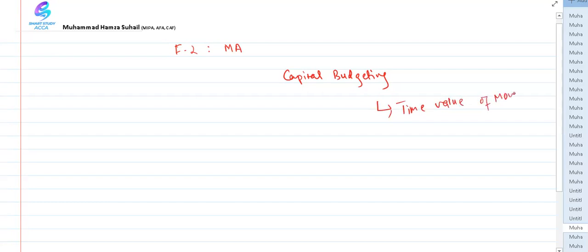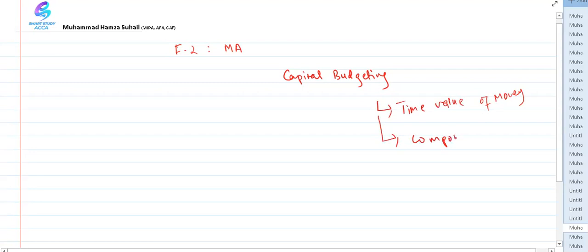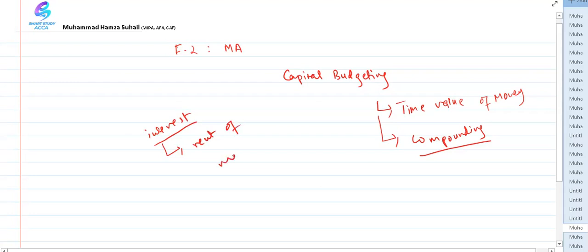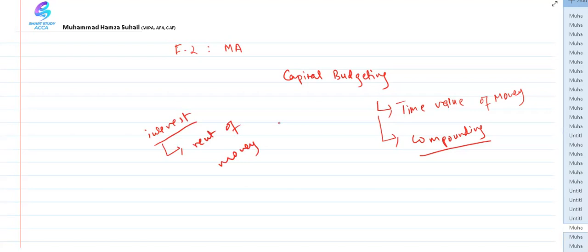We also discussed compounding in the previous lecture. If you remember, we talked about two important concepts regarding interest. Interest, defined in the simplest manner, is basically the rent of money that you borrow. For example, if someone needs financing and goes to a financial institution like a bank and asks for money, they will be granted a loan.